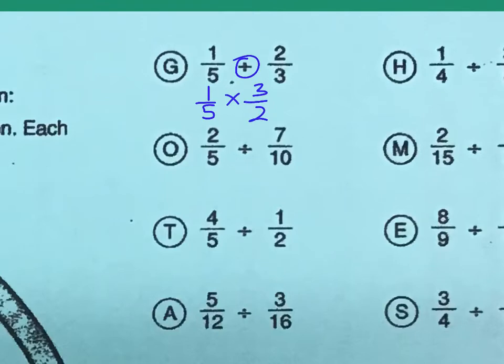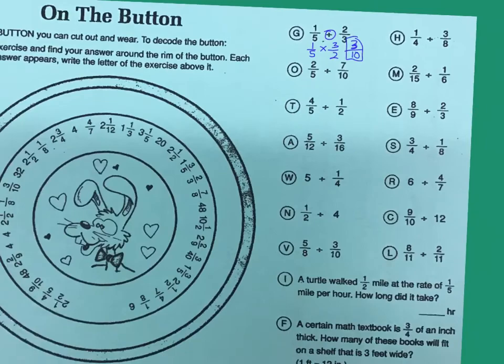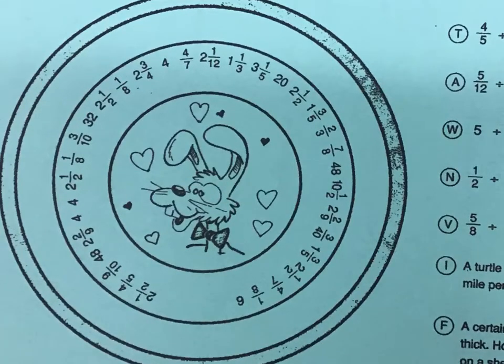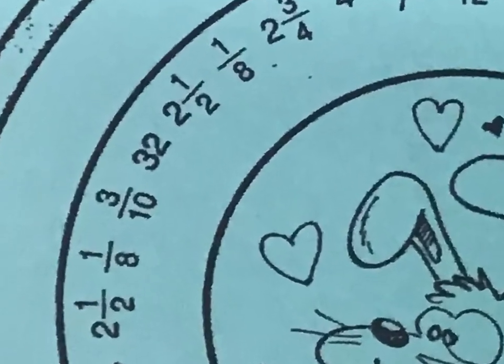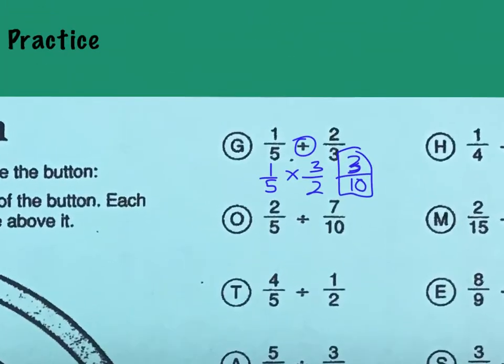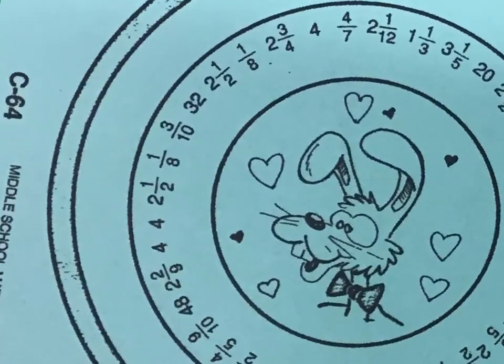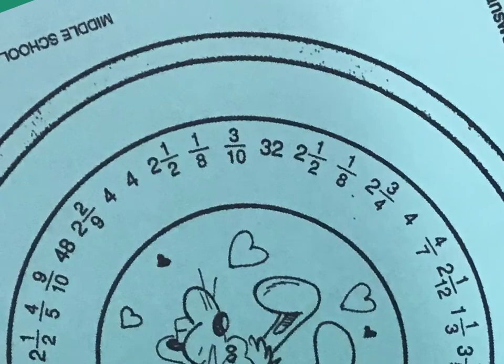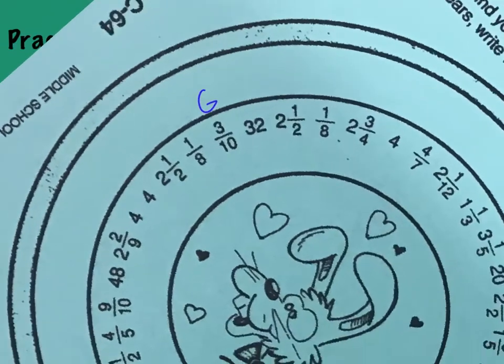Then all I have to do is multiply. Three tenths. Does three tenths simplify? No, it doesn't. So, I'm done. So, this is my answer for G. So, now I'm going to come down here to the puzzle and see if I can find three tenths. There it is. And what letter did it go with? G. So, I'm going to come over here and go, you know what? Here is G. There we go.